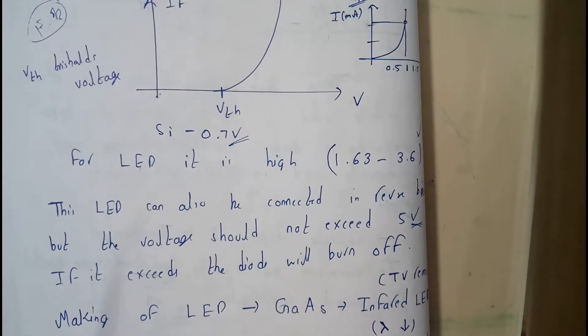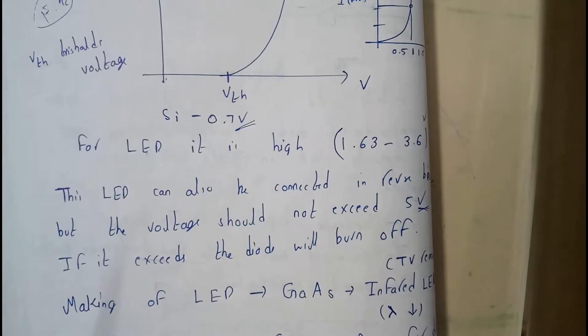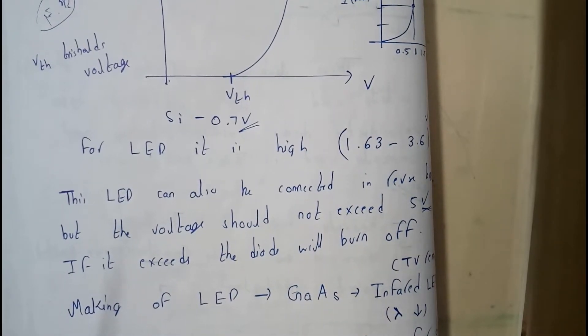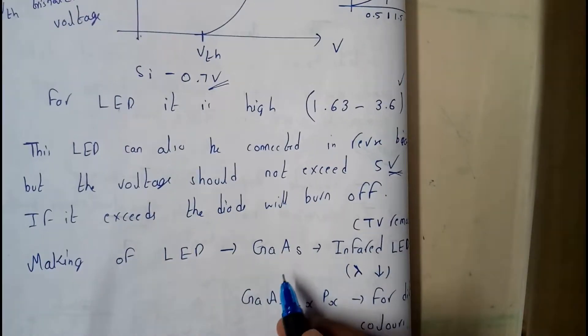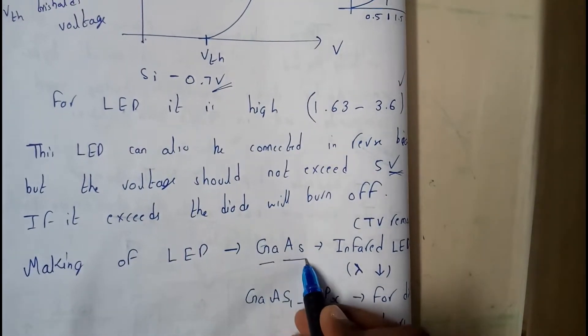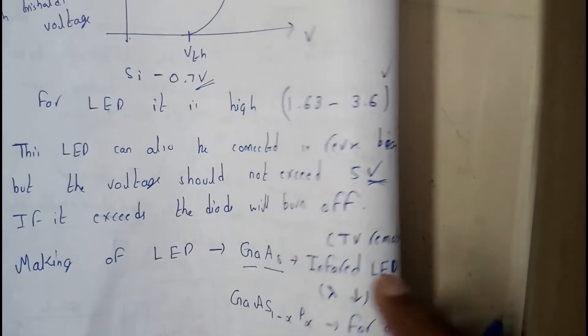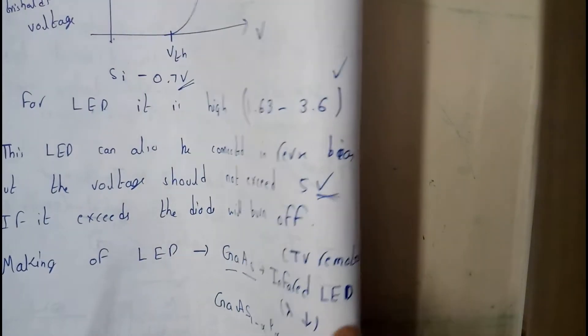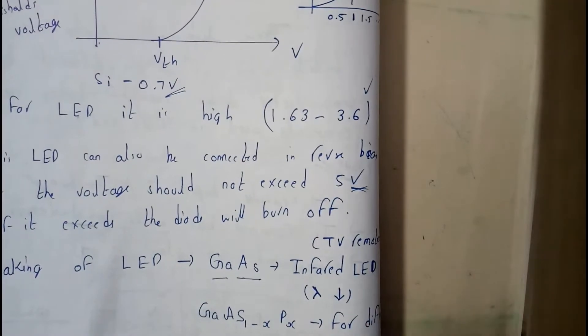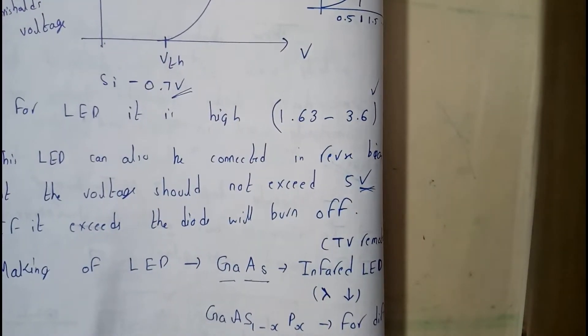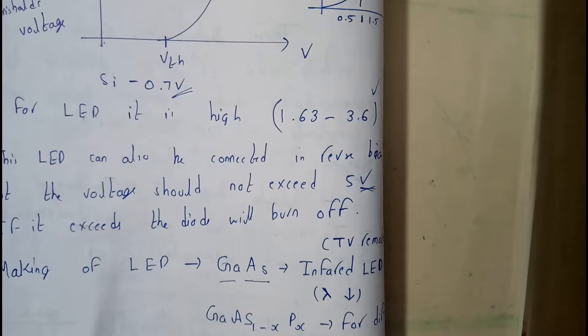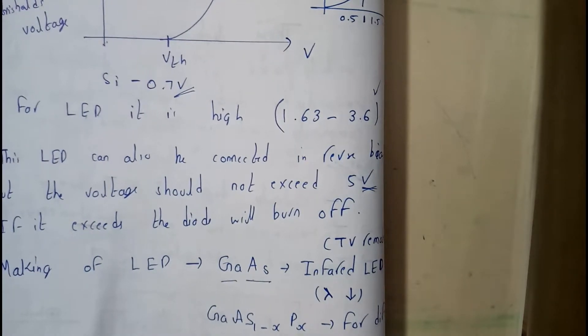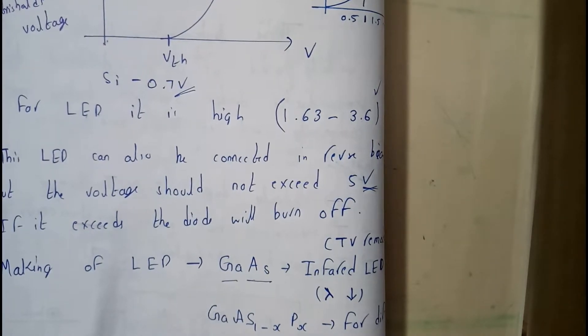Now your question will be something like this: what are the materials we use for creating an LED? Basically the LED is made up of gallium arsenide. That's a combination which gives an infrared light. Basically I hope everyone has a TV remote in your hand.